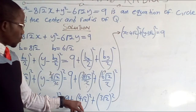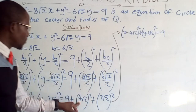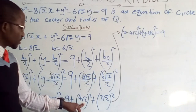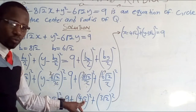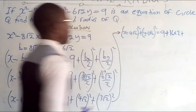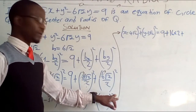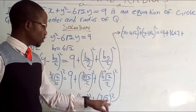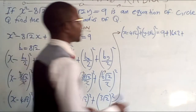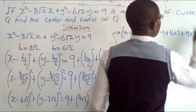4√2 to the power 2 means 4 times 4 = 16, and √2 times √2 = 2, so 16 times 2 = 32. For the y term: 3 to the power 2 is 9, and √2 to the power 2 is 2, so 9 times 2 = 18.